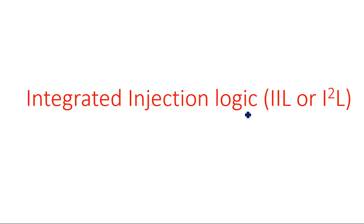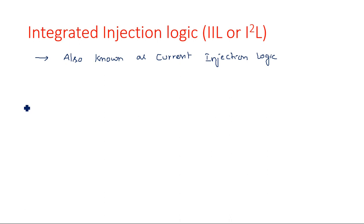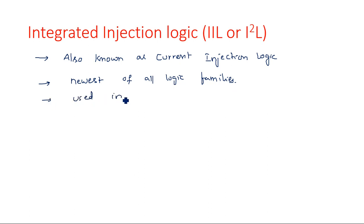In this video I am going to explain another logic family: Integrated Injection Logic, also known as Current Injection Logic, abbreviated as I²L or IIL. This type of integrated injection logic is the newest of all the logic families and is most commonly used in LSI (Large Scale Integration) and VLSI (Very Large Scale Integration) circuits.